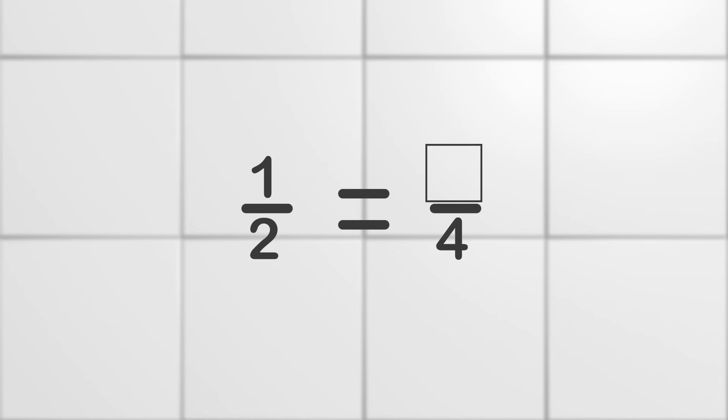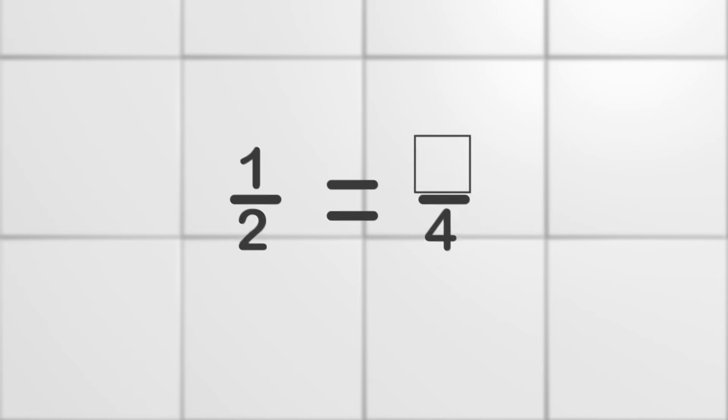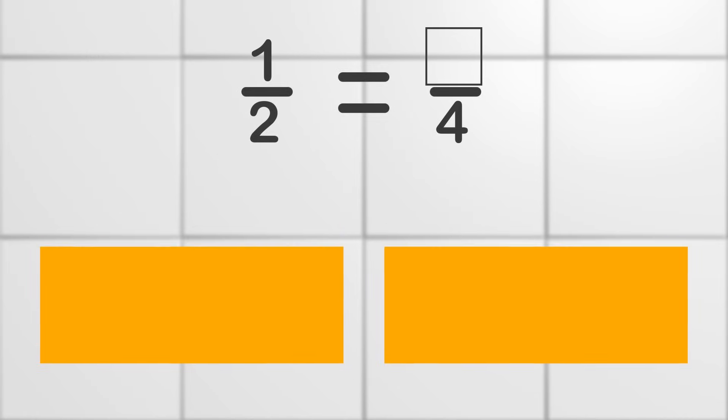Here we have the fraction on the left: 1/2 is equal to blank over 4. We need to find the numerator that goes in the empty box. There are different ways you can do this, but I want to use a drawing. Here are two rectangles. The rectangle on the left will be the one representing the 1/2. To make the rectangle represent 1/2, we need to divide it into two pieces because the denominator is 2.